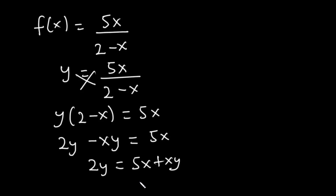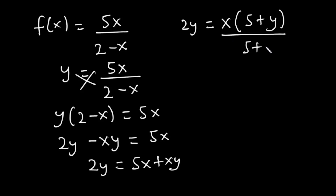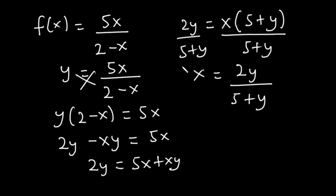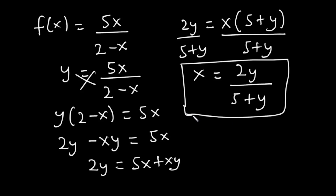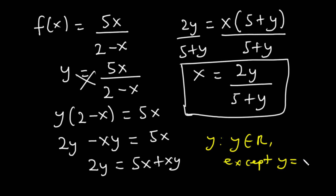Because we want to make x standalone, we are going to transpose negative xy to the right-hand side, so it's going to be 2y is equal to 5x plus xy. Making x the subject, we factorize: 2y is equal to x times bracket 5 plus y. Then we divide both sides by 5 plus y, so x is equal to 2y over 5 plus y. For this function to be defined, y must not be equal to negative 5, as the denominator would go to 0. So the range is y such that y is the set of all real numbers except y is equal to negative 5.